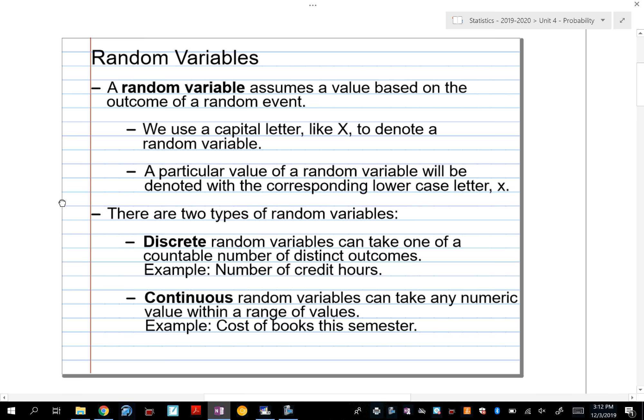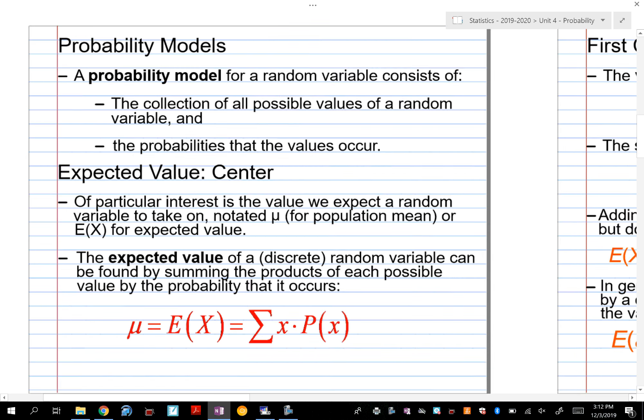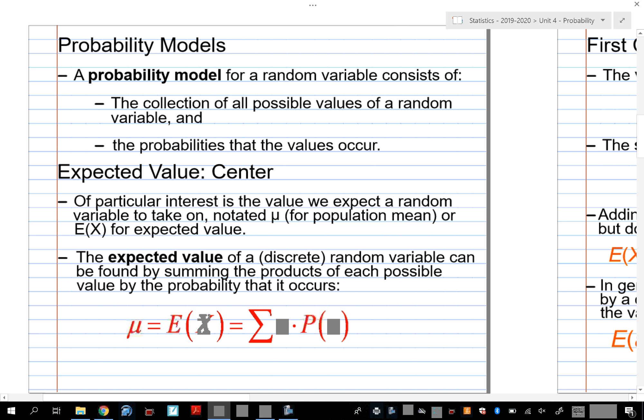Now, with these random variables, as you're going to see in the example later, we can actually create what is called a probability model. For example, if you gave me some information, I could create a probability model for the number of credit hours that you're going to take your first semester in college.